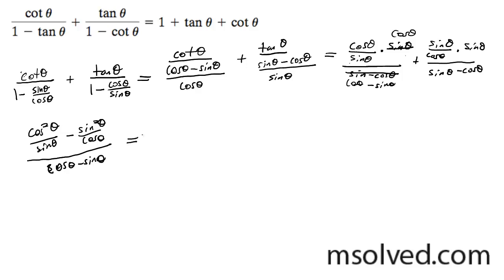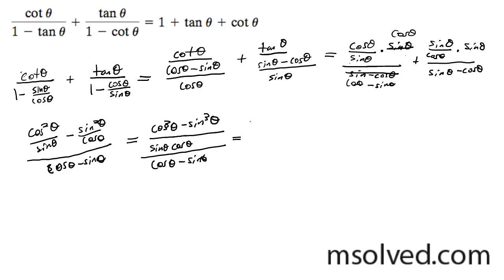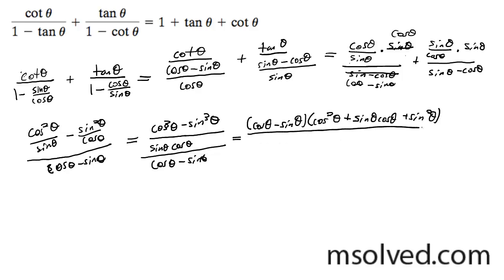This can be further made into cosine cubed theta minus sine cubed theta, all over sine theta cosine theta, all over cosine theta minus sine theta. Now following the rules of difference of cubes, I can factor out cosine theta minus sine theta on top, and I end up with cosine squared theta plus sine theta cosine theta plus sine squared theta, all over sine theta cosine theta, over cosine theta minus sine theta.